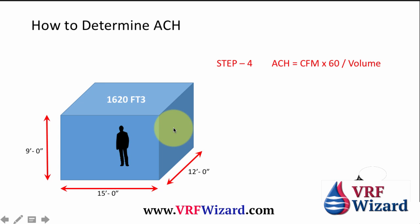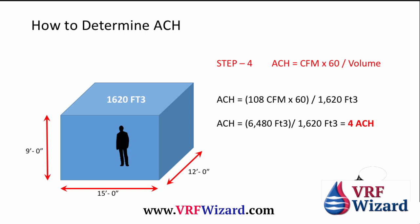If we need to work backwards and we know the CFM of the room but not how many air changes it is, we can determine how many air changes per hour a certain CFM is worth using this formula. Take the 108 CFM, multiply it by 60 minutes in an hour, and divide by the volume — that gives us the air changes. You can work it either way, forwards or backwards; the formula works the same.